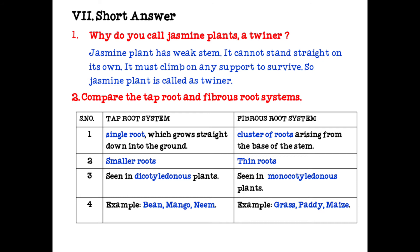Next topic is short answer. Why do you call jasmine plants a twinner? Jasmine plant has a weak stem. It cannot stand straight on its own. It must climb on any support to survive. So jasmine plant is called a twinner.